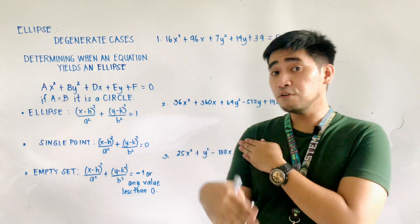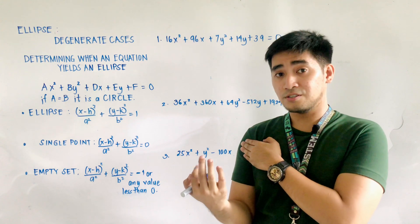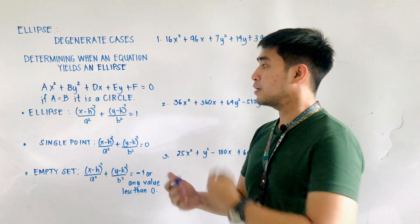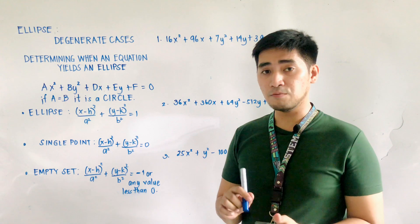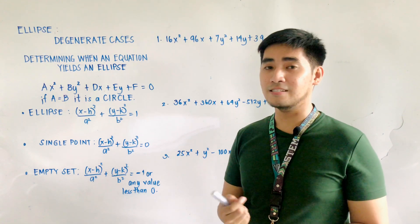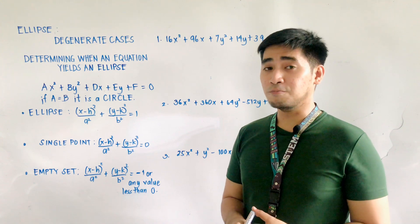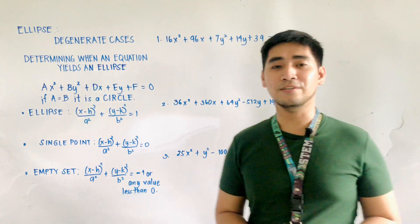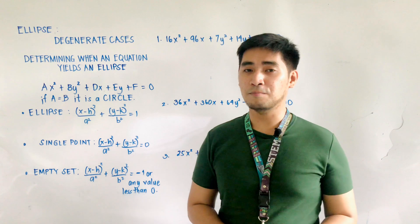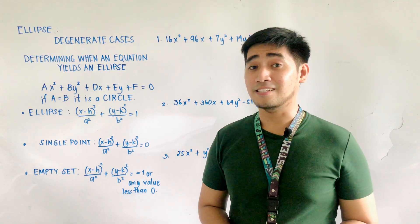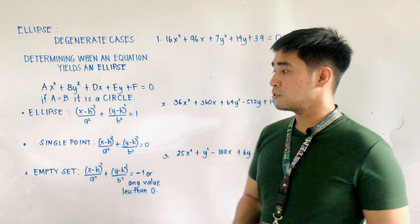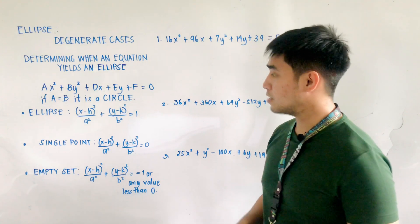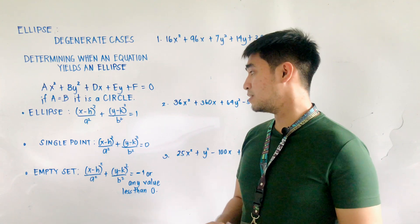Let us review what we have learned from our past discussions regarding ellipse. This is the equation of an ellipse in general form: ax² + by² + dx + ey + f = 0. Remember the right side is equal to zero. And if a is equal to b, it is not anymore an ellipse — it becomes a circle. For the ellipse, it takes the standard form (x − h)²/a² + (y − k)²/b² = 1.